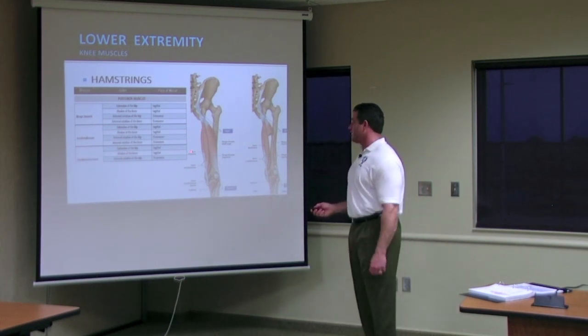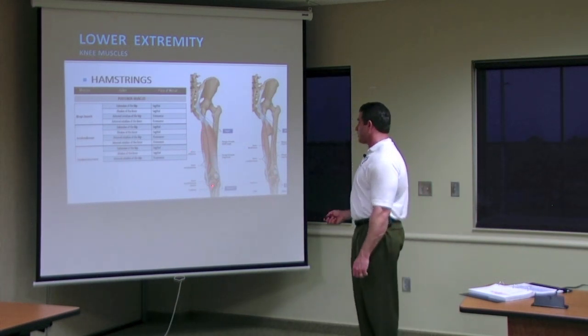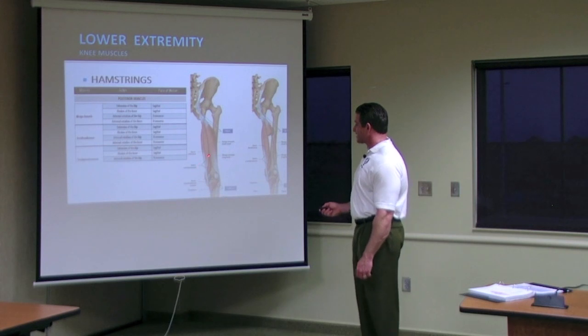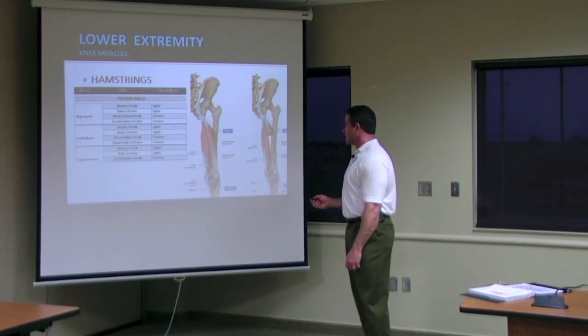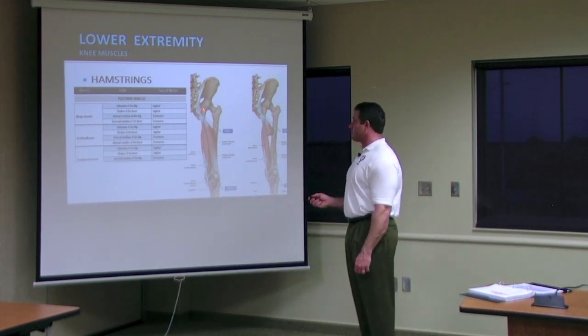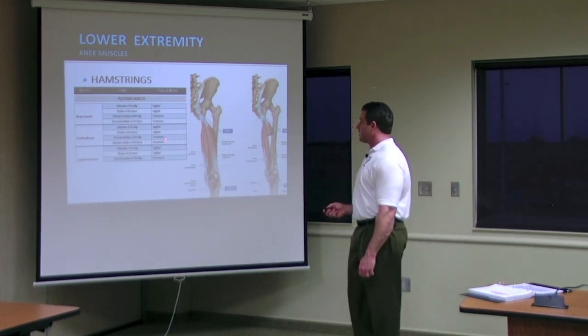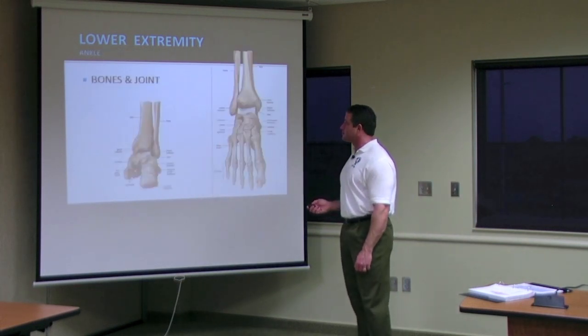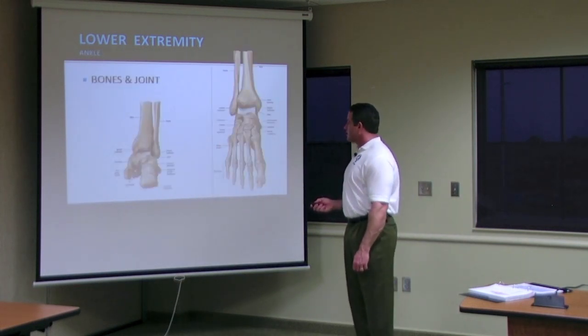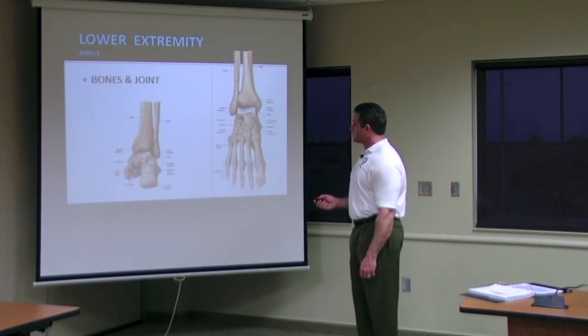Your hamstrings are on the backside — the posterior portion — of your knee joint. They are responsible for flexing the knee as well as extending the hip. They are also an example of two-joint muscles, which we'll discuss further in a moment.